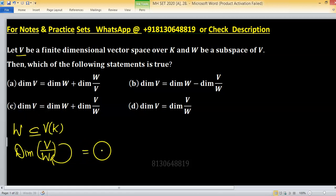So the dimension of this quotient space equals the dimension of V minus the dimension of W. Keep in mind this is true only in the case of finite dimensional spaces. We cannot do this in infinite dimensional spaces.